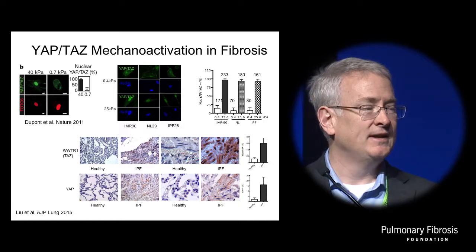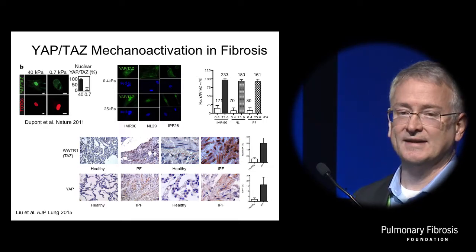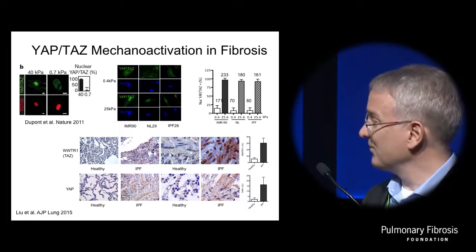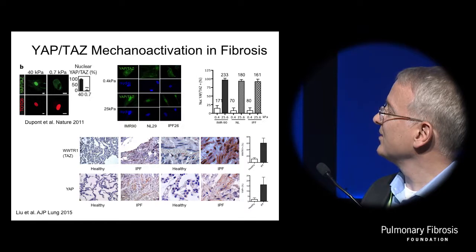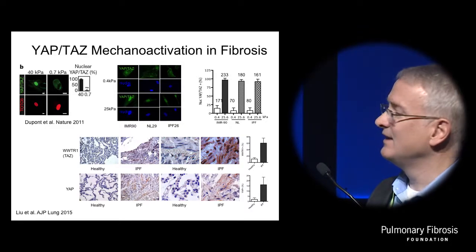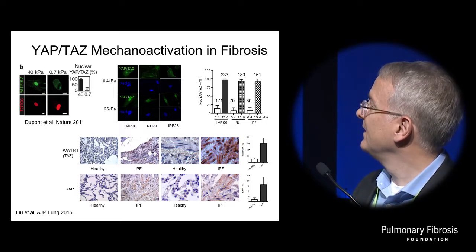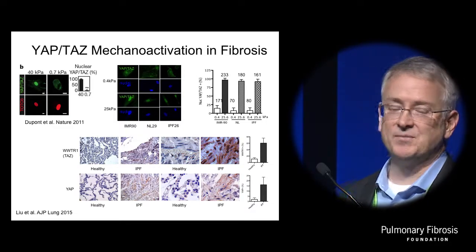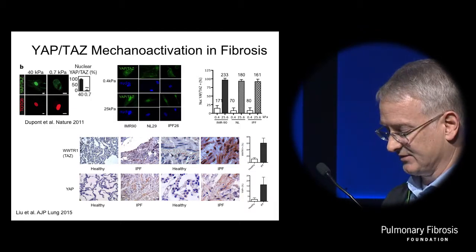Around the same time, we were wondering how to interpret our results with lung fibroblasts on soft and stiff matrices. We stumbled across a group working on another class of transcription factors called YAP and TAZ that also translocate from the cytoplasm on a soft matrix to the nucleus on a stiff matrix. We looked in normal and IPF-derived patient fibroblasts and found YAP/TAZ strongly nuclear on a stiff matrix and largely diffuse on a soft matrix, suggesting it switches location based on extracellular matrix stiffness. We also found evidence for increased staining and nuclear localization, especially of TAZ, in IPF lung tissue sections compared to healthy sections.